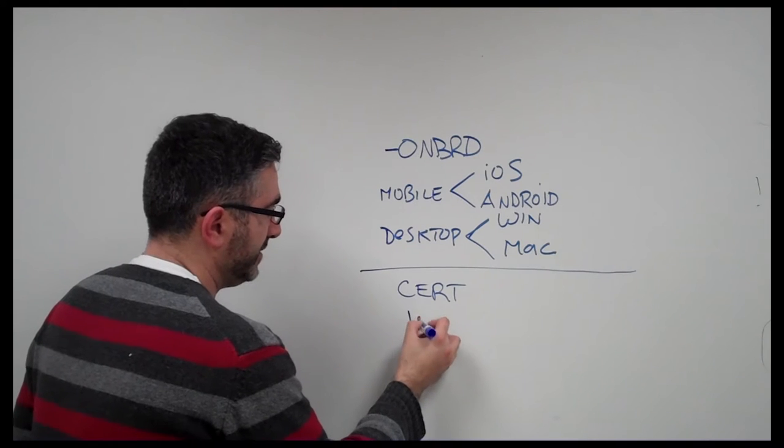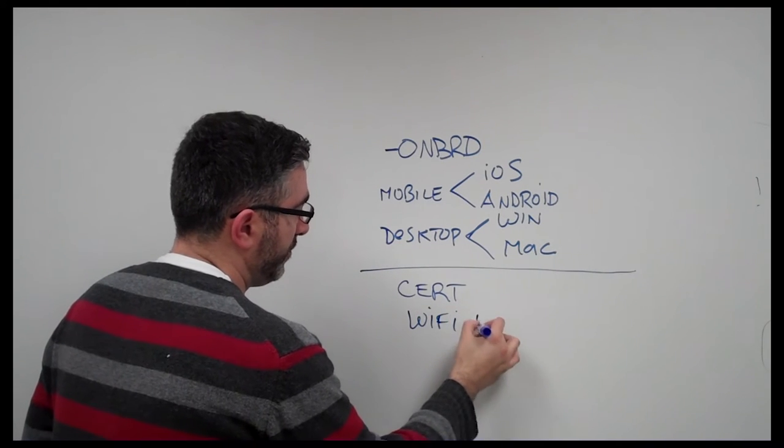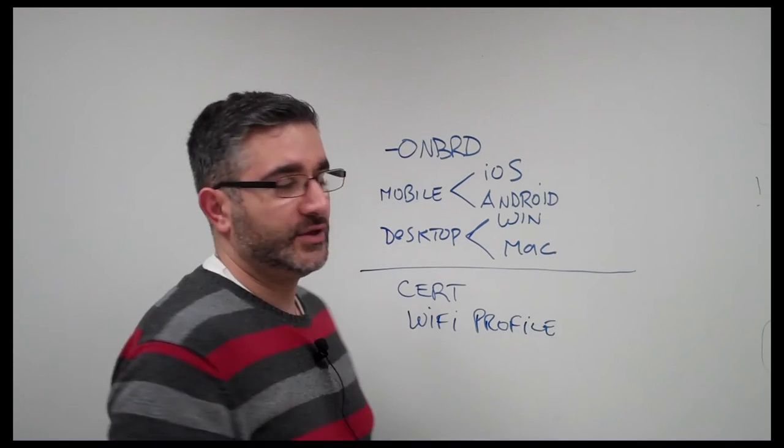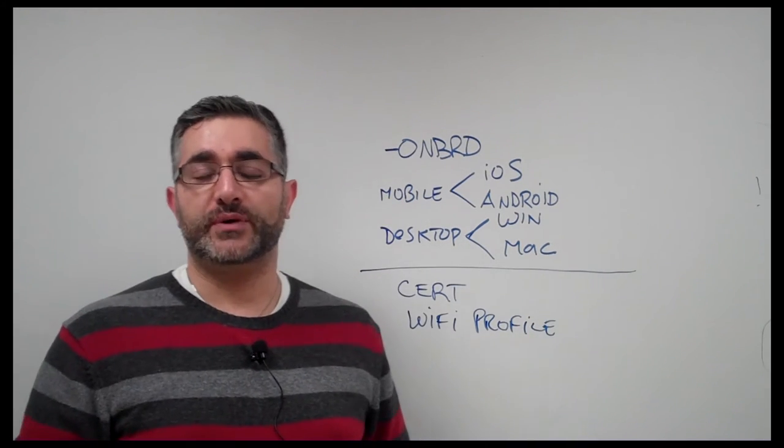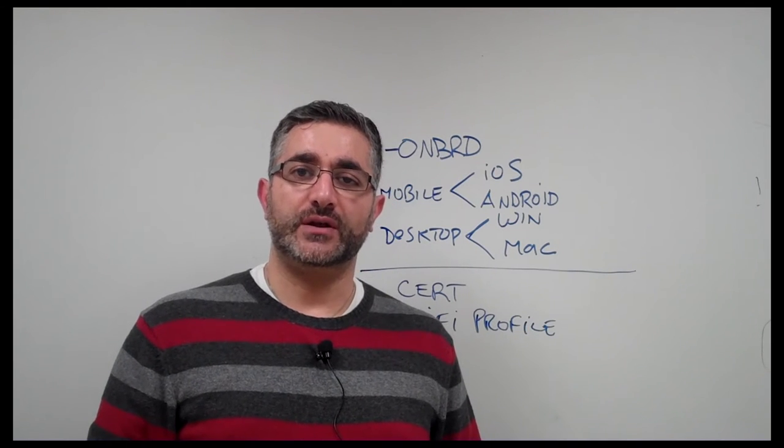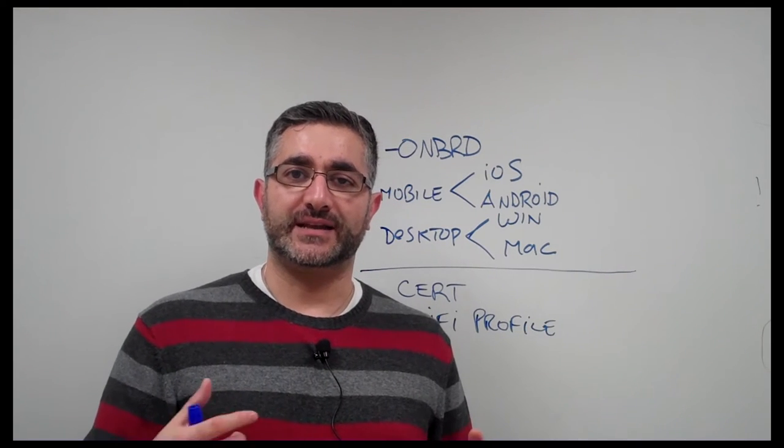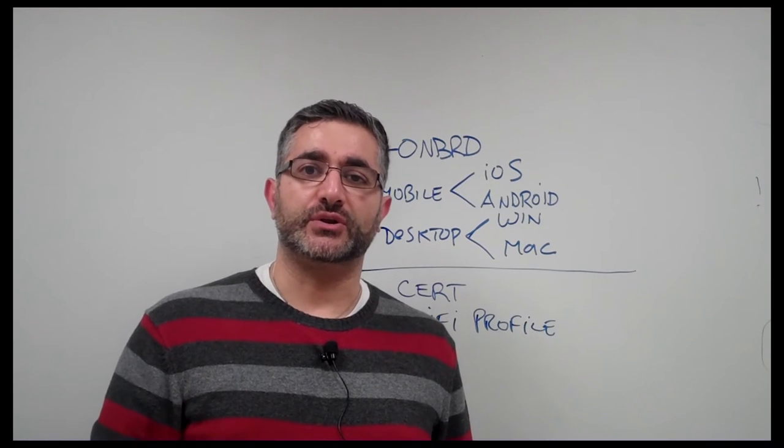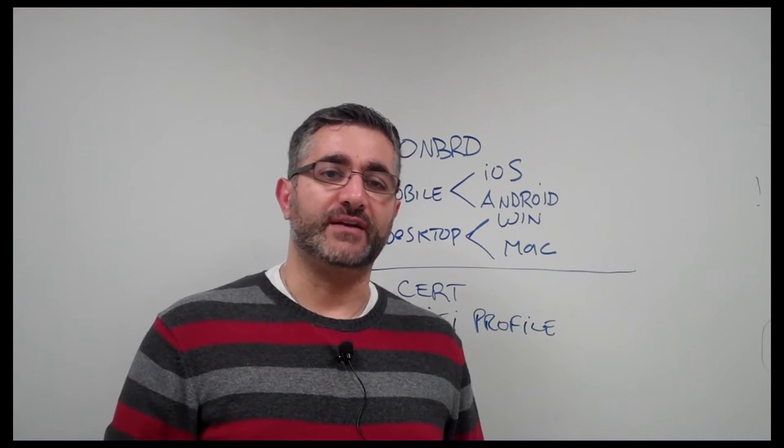The next thing is Wi-Fi profile. A Wi-Fi profile could be just the guest network or the corporate network. You can configure as many SSIDs as you want, so that when the user has that device and they come on premise, they'll be able to securely connect to the Wi-Fi infrastructure.